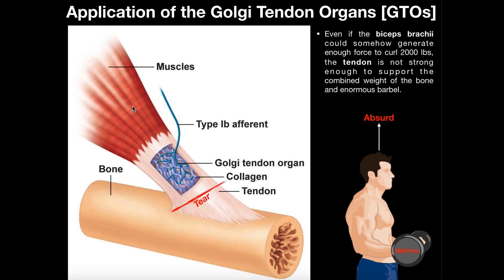Another thing about Golgi tendon organs is that they function during exercise. Suppose a skeletal muscle was to generate a force so high that the tendon couldn't handle it. Tendons have a finite amount of strength, and so if the muscle generates a ridiculously massive force, it might actually tear the tendon right off the bone — a serious injury. So rather than risk the injury, if the force generated is high enough, the Golgi tendon organ will sense that and through a polysynaptic reflex loop through the spinal cord, it will lead to the inhibition of that muscle, preventing you from generating that much force and potentially ripping the tendon off the bone.